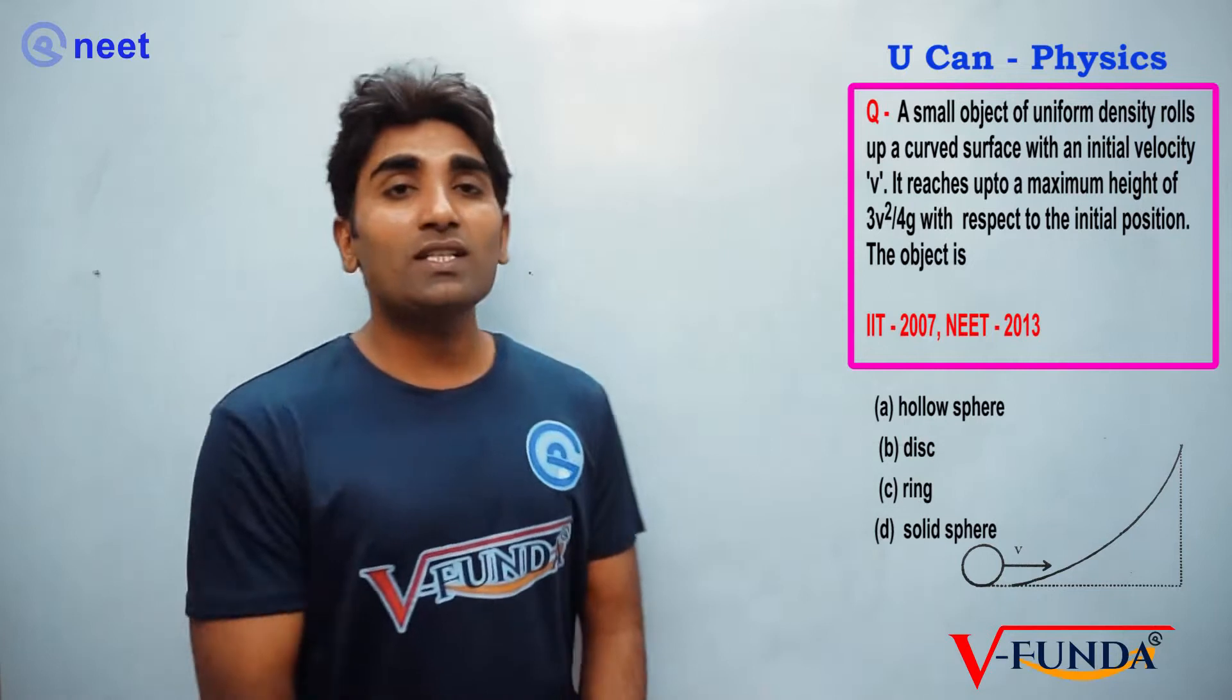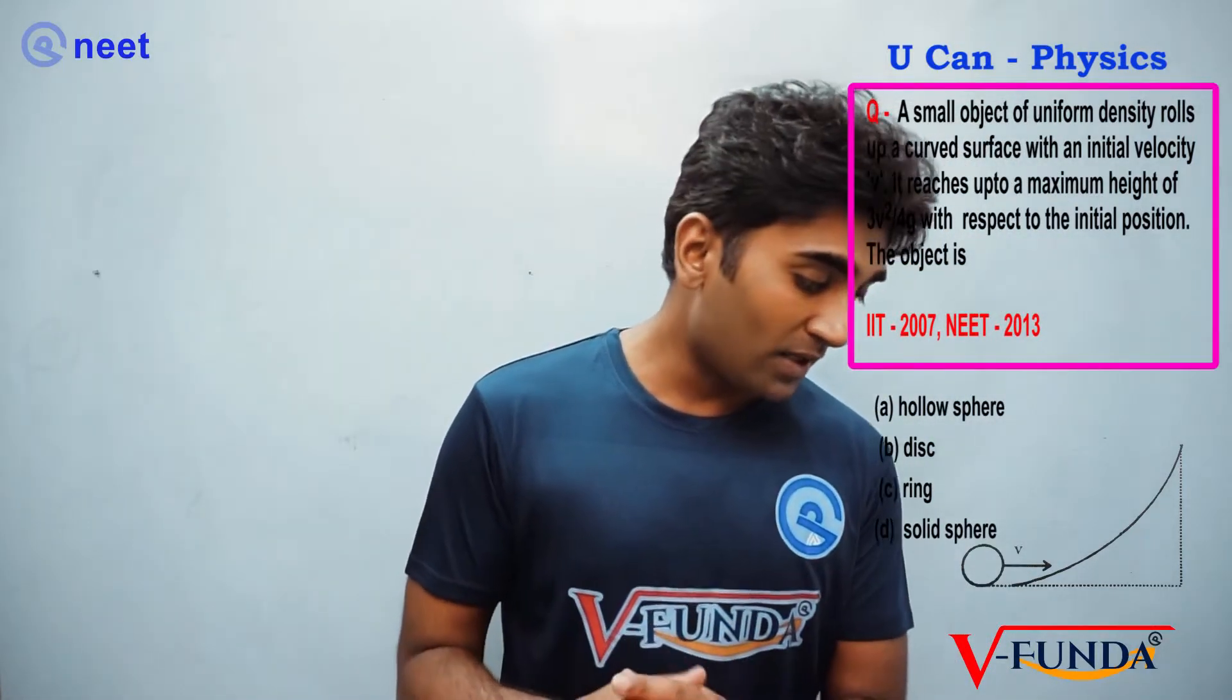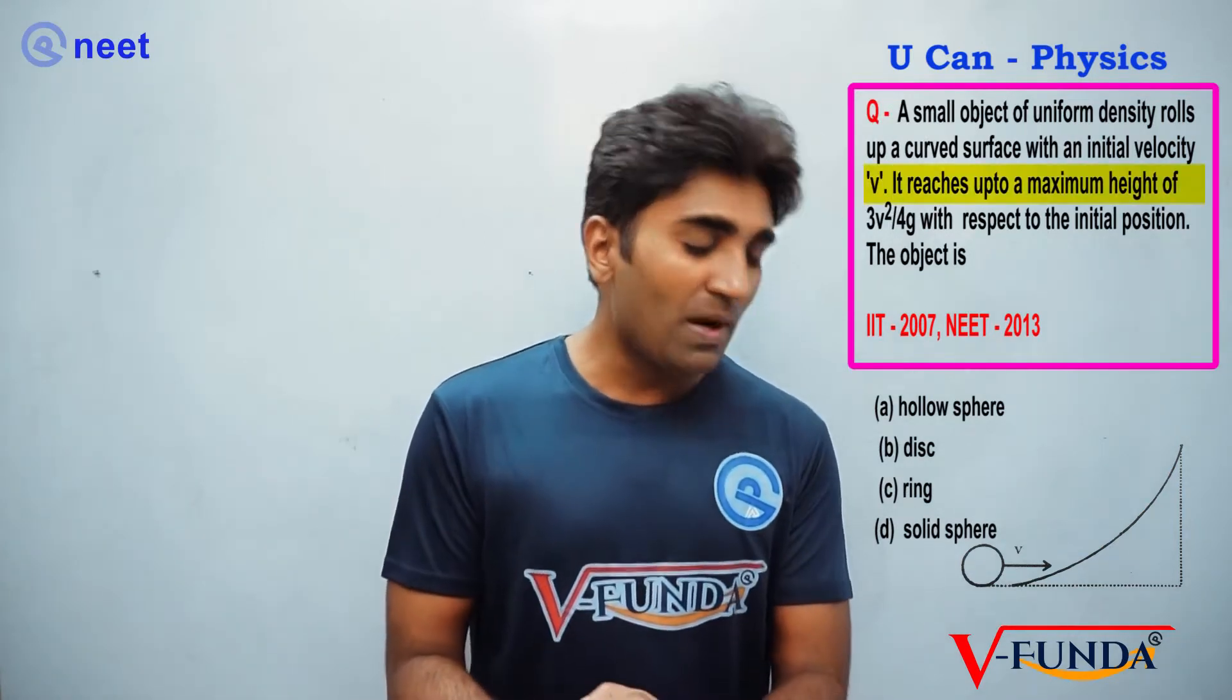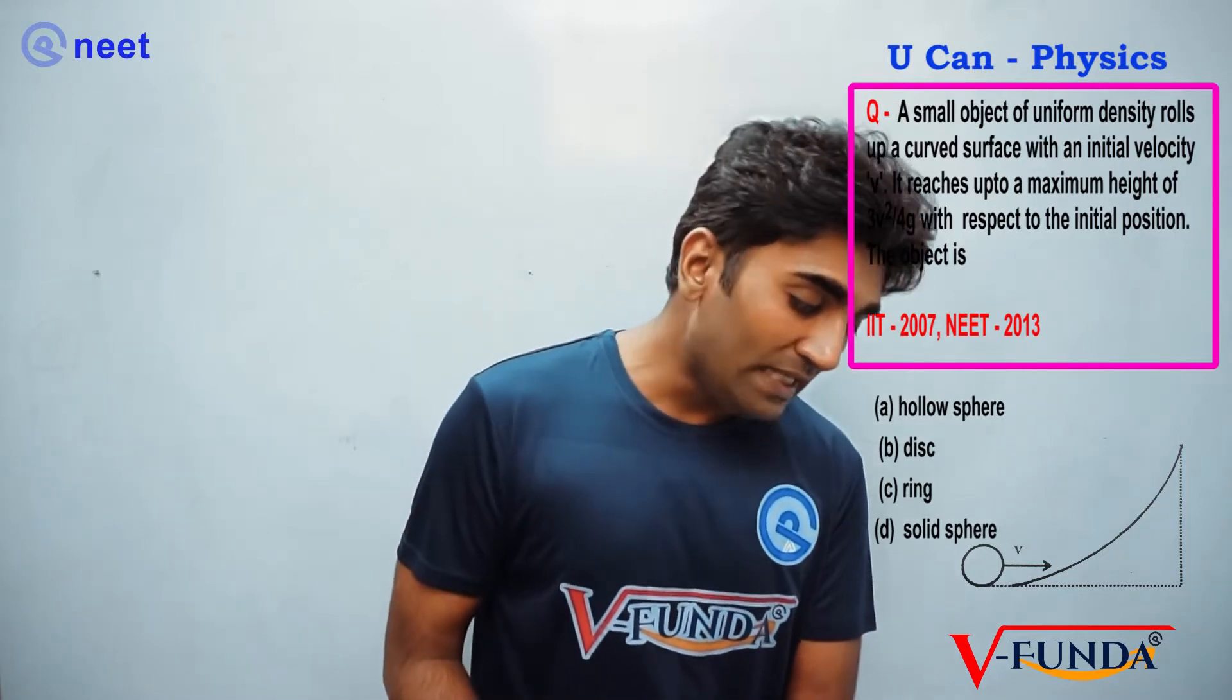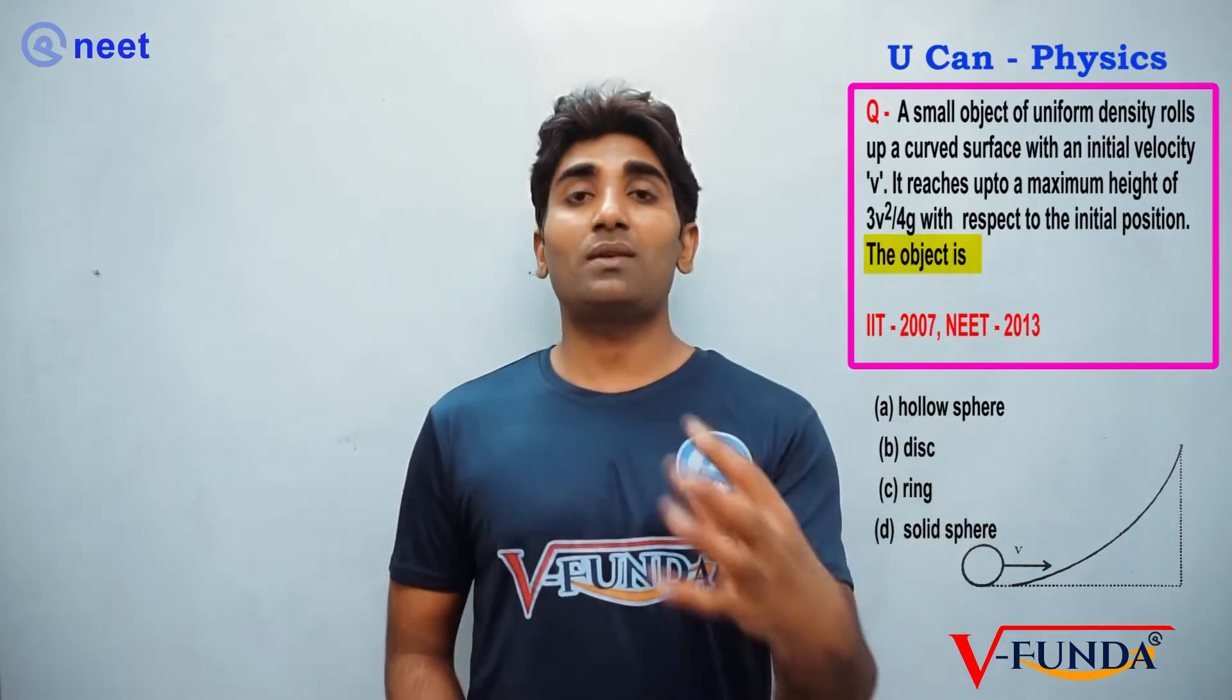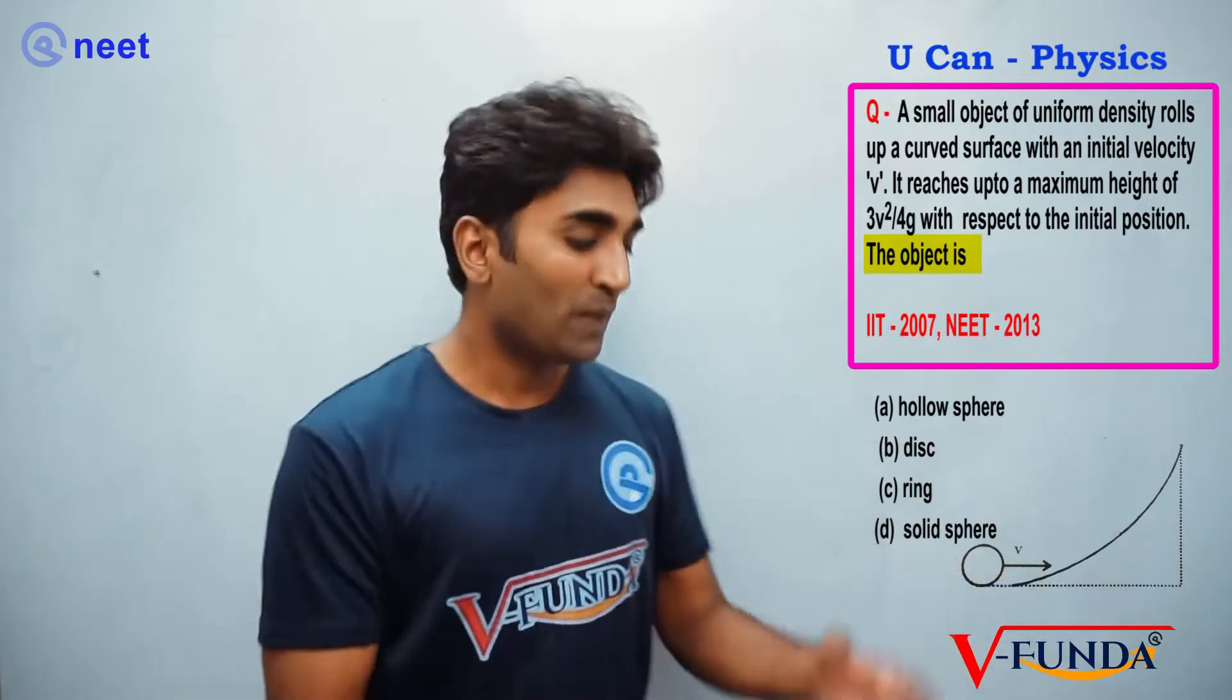The question states: a small object of uniform density rolls off a curved surface with an initial velocity V. It reaches up to a maximum height of 3V²/4G with respect to the initial position. The object is on a curved surface, it is called rolling motion.